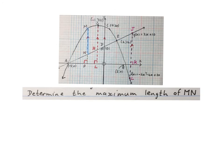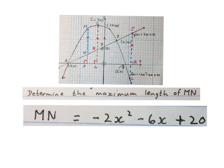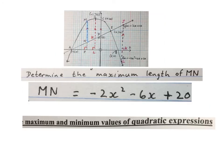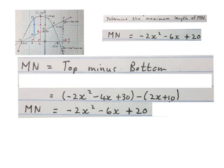The last question on these two graphs is: determine the maximum length of MN. We have a quadratic expression for the length of MN, which we got from top minus bottom. And I advise you to go and look at the video that says maximum and minimum values of quadratic expressions. There we gave you more than one way to find this answer. Let's quickly take this question from the top. First, you find MN's expression with top minus bottom. You take the parabola minus the straight line. You get this new expression, which I wrote down here.